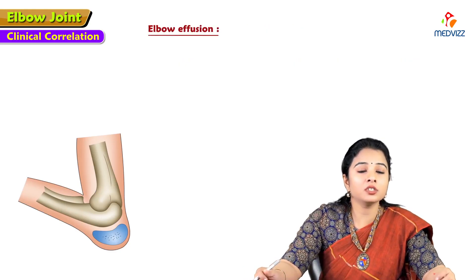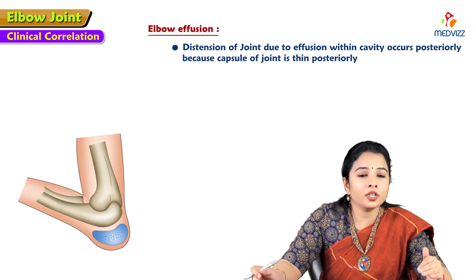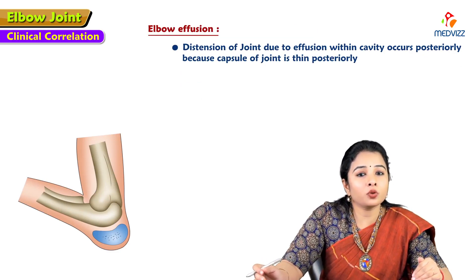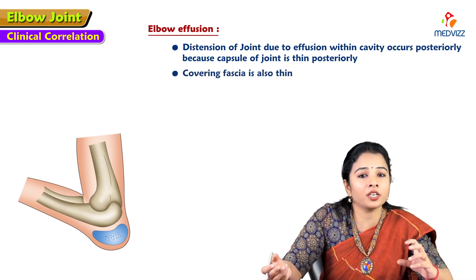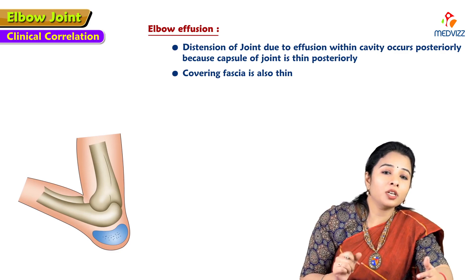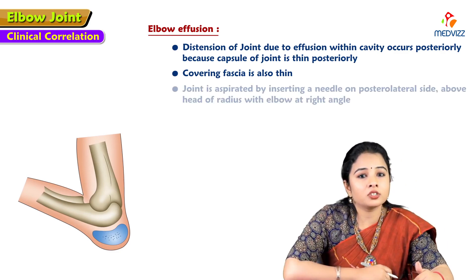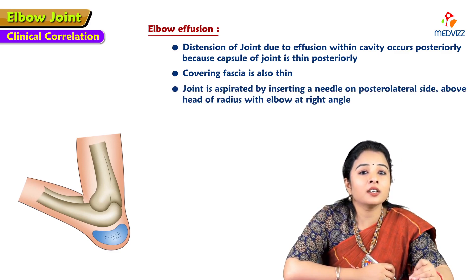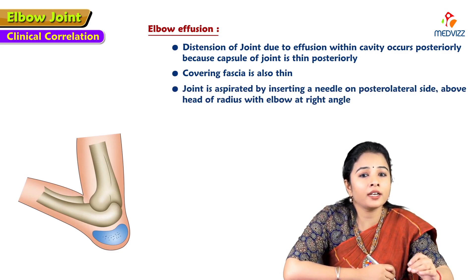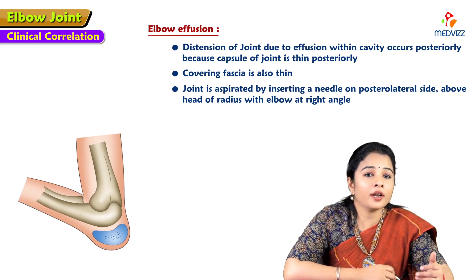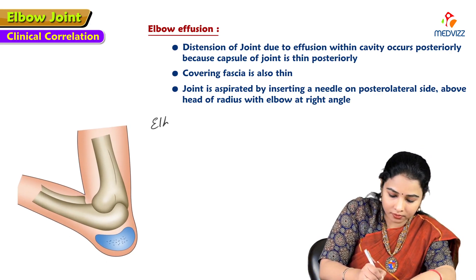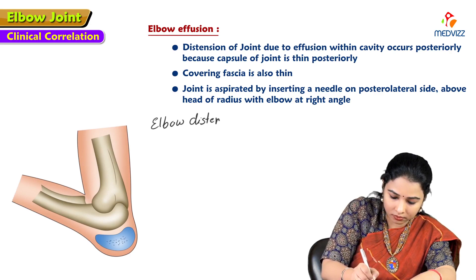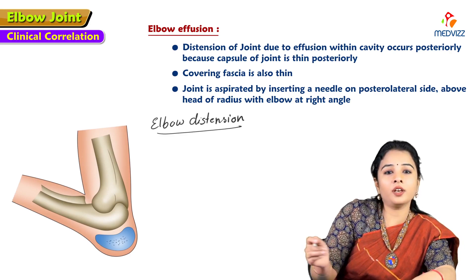Elbow effusion: distension of the elbow joint due to effusion within its cavity occurs posteriorly because the capsule and overlying fascia are thin on the posterior aspect. The joint is aspirated by inserting a needle on the posterolateral side above the head of the radius with the elbow at right angles.